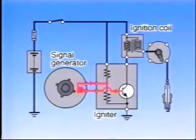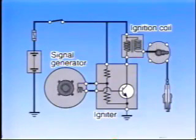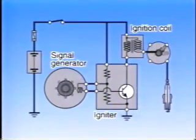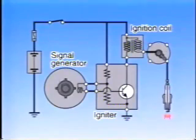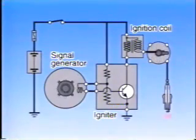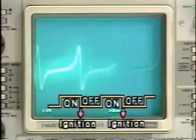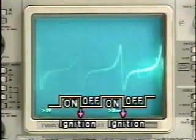In this way, when the engine is running, the transistor is turned on and off every time one of the signal rotor's teeth passes the pickup coil. Every time the transistor is turned off, a high voltage is generated in the secondary coil.